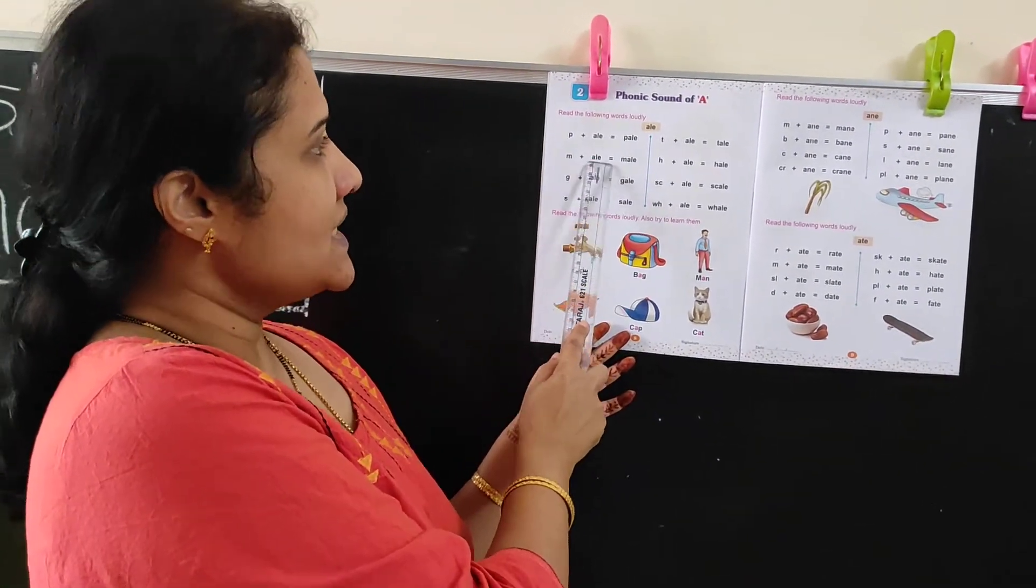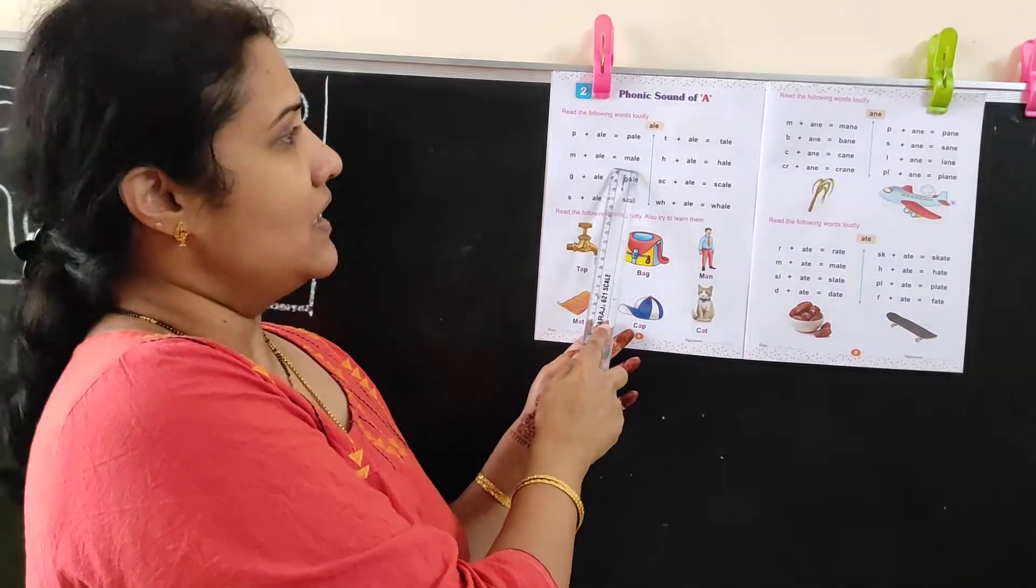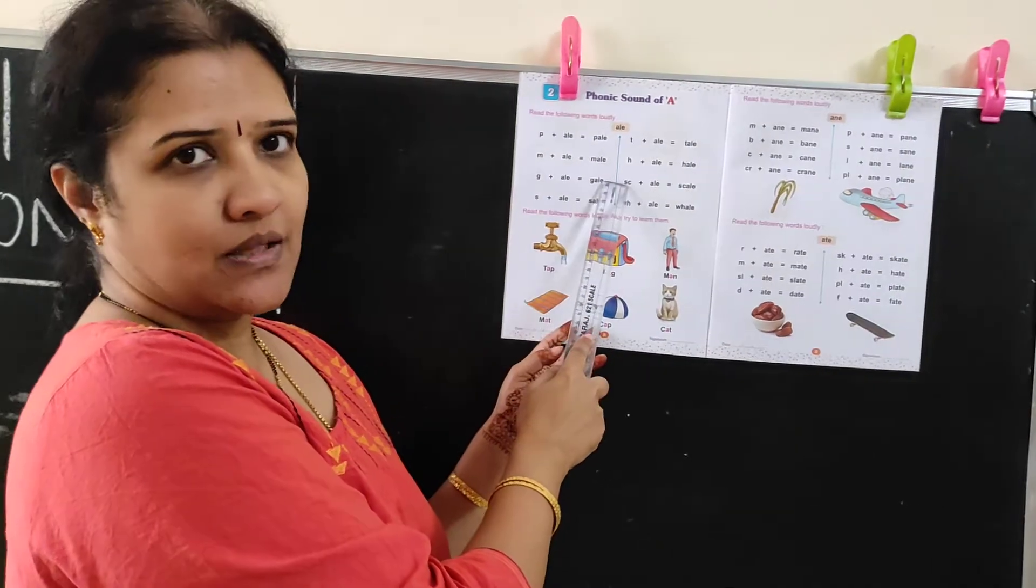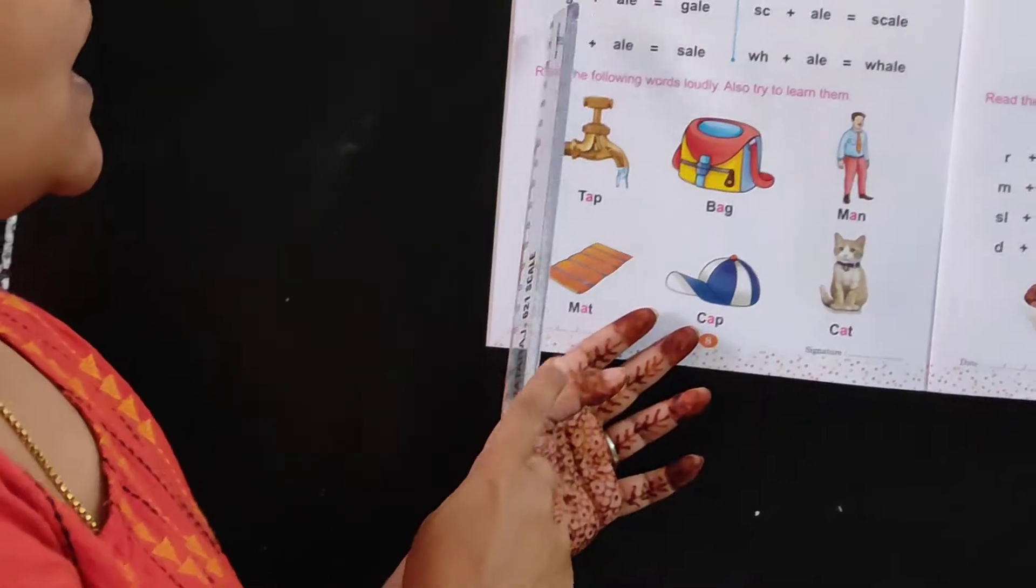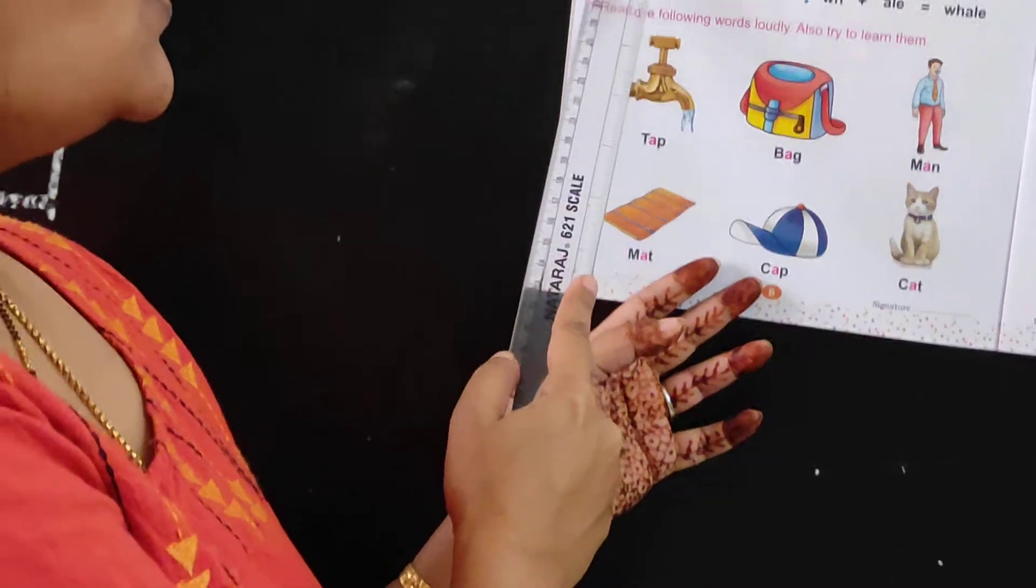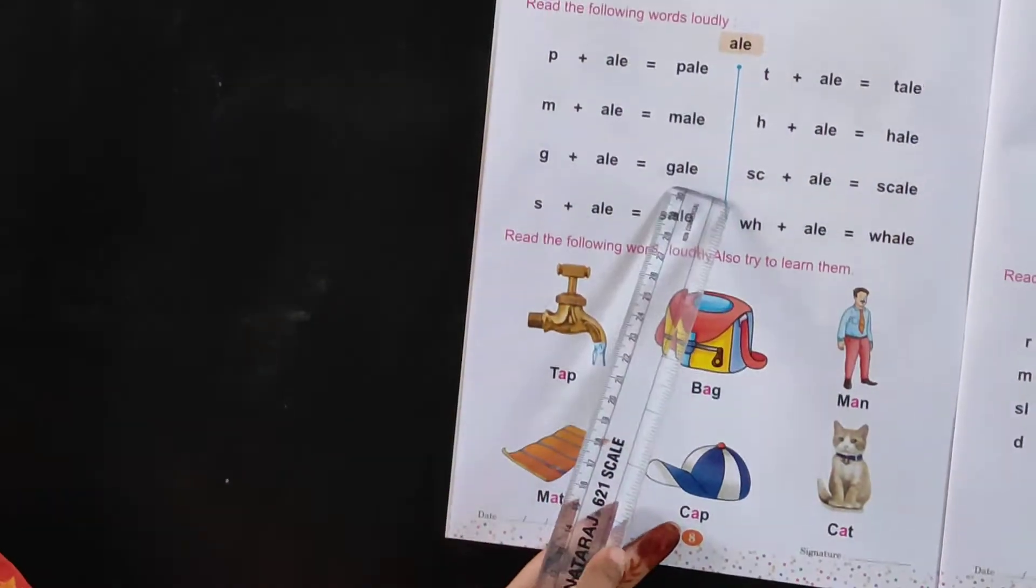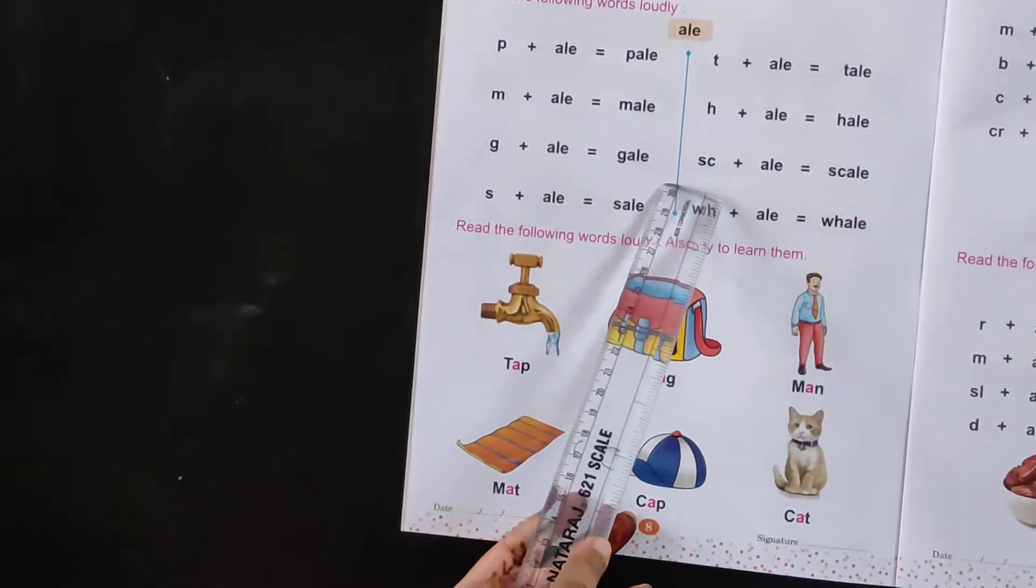Second, M plus A is male, M-A-L-E, male. Next is gale, G plus A is gale, G-A-L-E, gale.